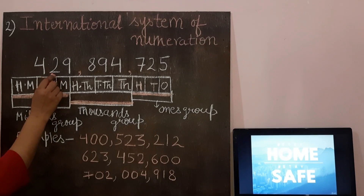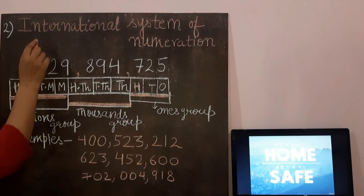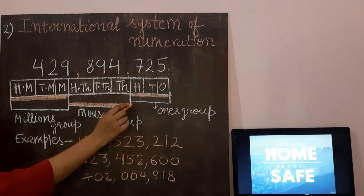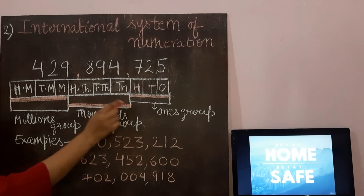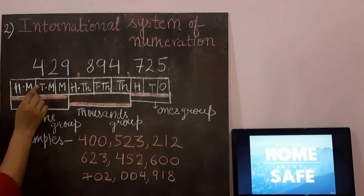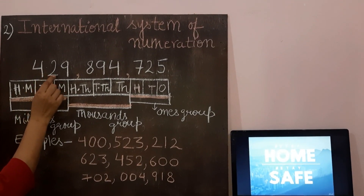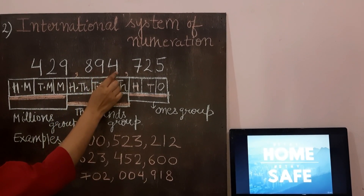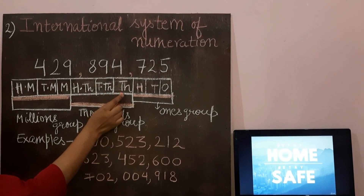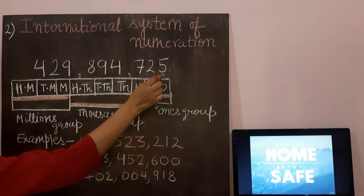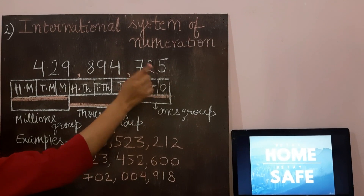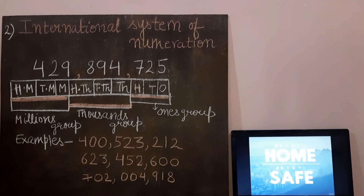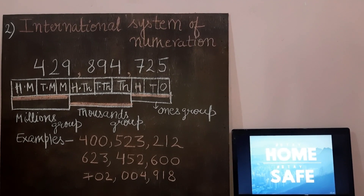Look at this number. In the international number system, how will we read this number? This number will be read as 429,894,725. So this is how we read numbers in the international number system.